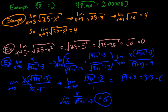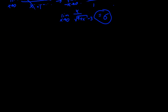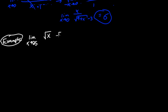Besides rationalizing the denominator, sometimes we'll want to rationalize the numerator. Let's go over one example of that. We have the limit as x approaches 25 of the square root of x minus 5 divided by x minus 25. If we plug in 25, we're obviously going to get 0 divided by 0, so we need to do some algebraic manipulation to get this into something a little bit different.